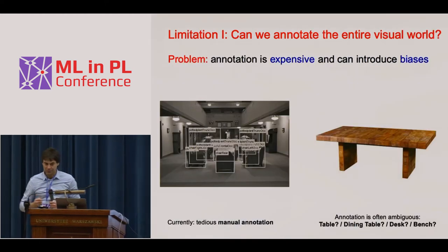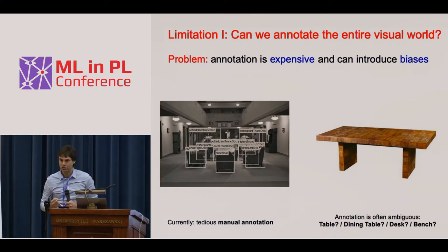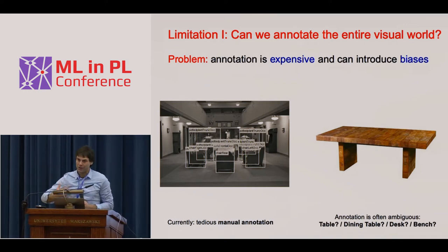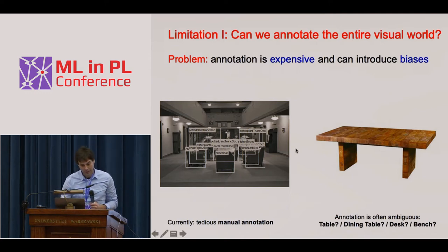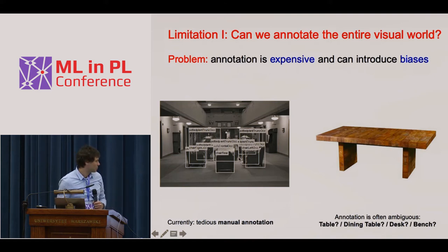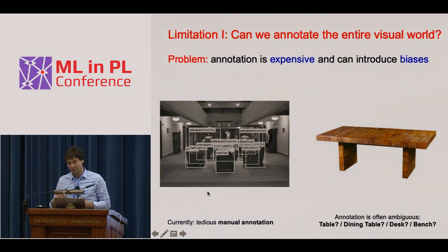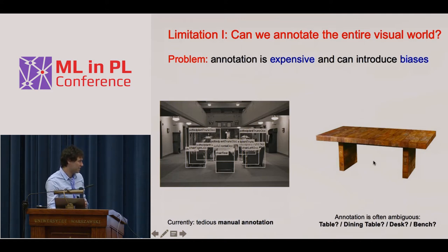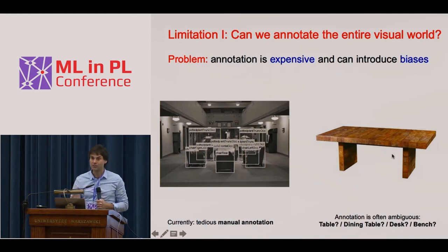However, I want to show two major limitations of this approach for building a more general learning machine. The first is that annotation is expensive. Annotating bounding boxes or segmentation masks requires a lot of effort. Sometimes the annotations are even ambiguous — how would you label an image? Is this a chair, a dining table, a desk, or a bench?